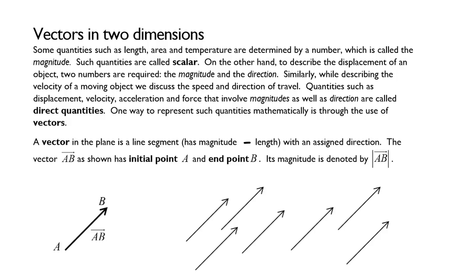On the other hand, to describe the displacement of an object, two numbers are required: the magnitude and the direction. Similarly, while describing the velocity of a moving object, we discuss the speed and direction of travel.